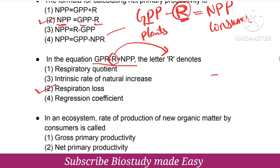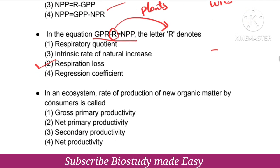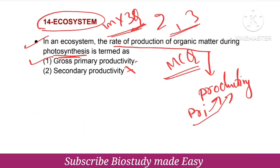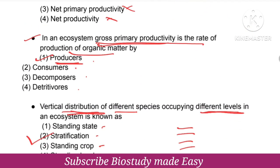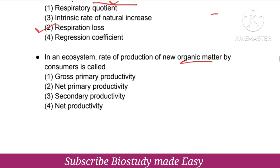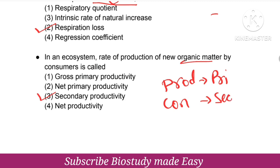Primary productivity — producers produce primary productivity; consumers produce secondary productivity. Plants have GPP, and after respiration loss, we get NPP. Consumers use NPP and produce secondary productivity.